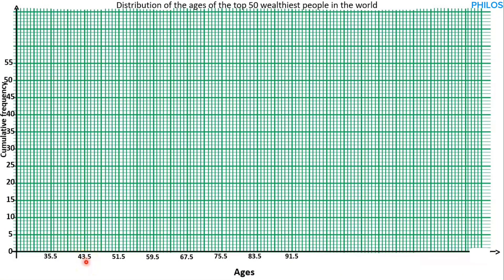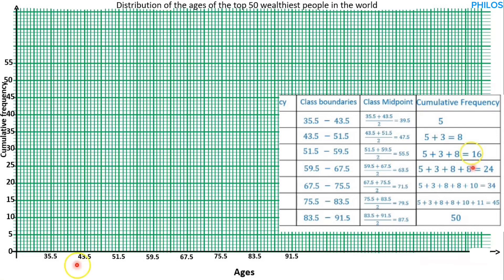When you look at the first class, the cumulative frequency is 5, and the upper class boundary is 43.5 — not 35.5. So we must be careful: we plot the upper class boundary of the first class (43.5) against the cumulative frequency of the first class (5). But before that, the lower class boundary of the first class (35.5) is plotted against zero. Then the upper class boundary of the second class (51.5) is plotted against the cumulative frequency of the second class, which is 8. Then the upper class boundary of the third class is plotted against the cumulative frequency of the third class, which is 16.